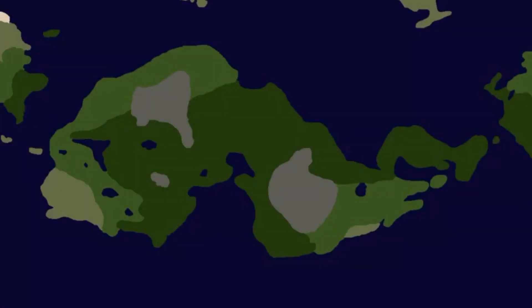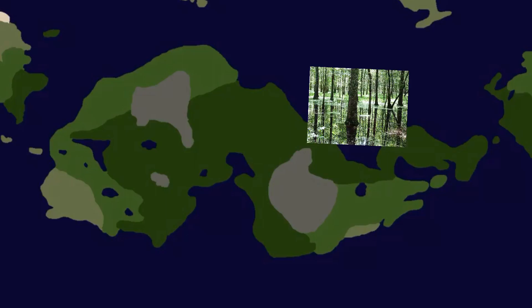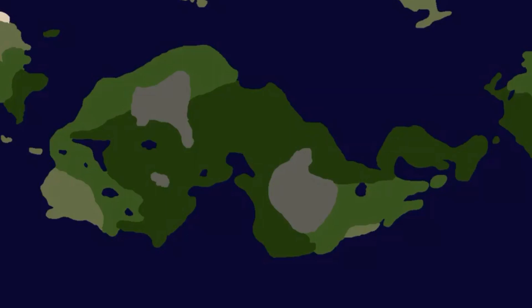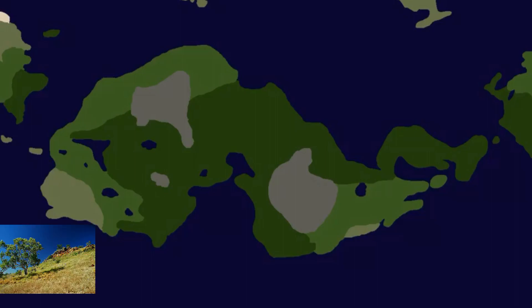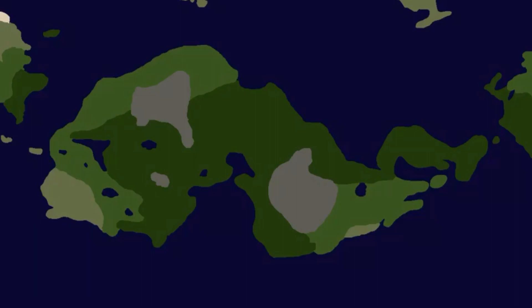The next continent is Ent, an island continent only slightly larger than Australia that's found almost entirely in the equatorial zone of Swafinia. This causes most of the continent to be covered in a large, dense rainforest larger than the Amazon, where most of Swafinia's biodiversity is found. The driest areas of Ent are usually monsoon-driven dry forests or small savannahs, and the alpine regions of Ent are somewhat composed of cloud forests.